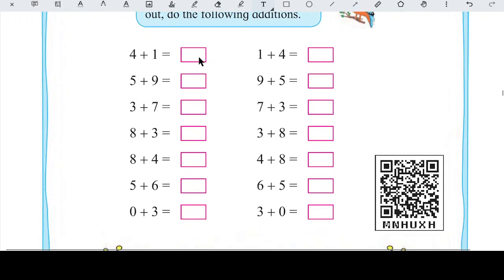So yahan pe humein thode thode examples diye gaye hain addition ke. So let's do it. 4 plus 1, so angels, 4 plus 1 is 5, hai na. Next, 9 plus 5, 9, 10, 11, 12, 13, 14. To yeh wahi tha jo humein last chapter mein humne jumps kiye the, na? Yeh wohi type ke hain, angels. 3 plus 7, 3, 4, 5, 6, 7, 8, 9, 10. To 3 plus 7 is 10. Next, 8 plus 3, 8, 9, 10, 11. So 8 plus 3 is 11.